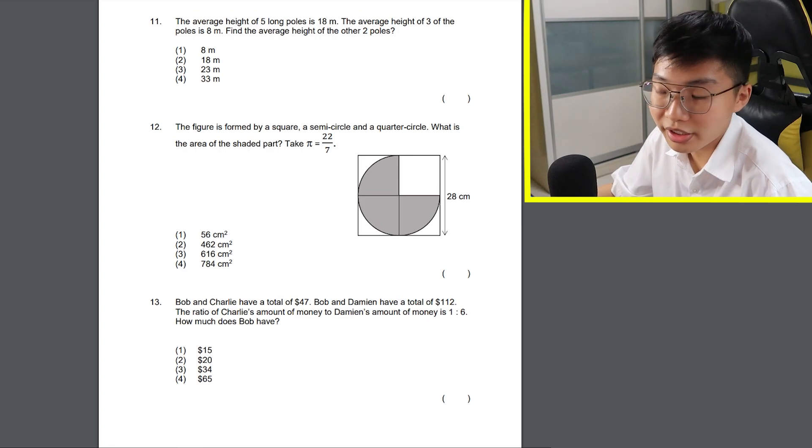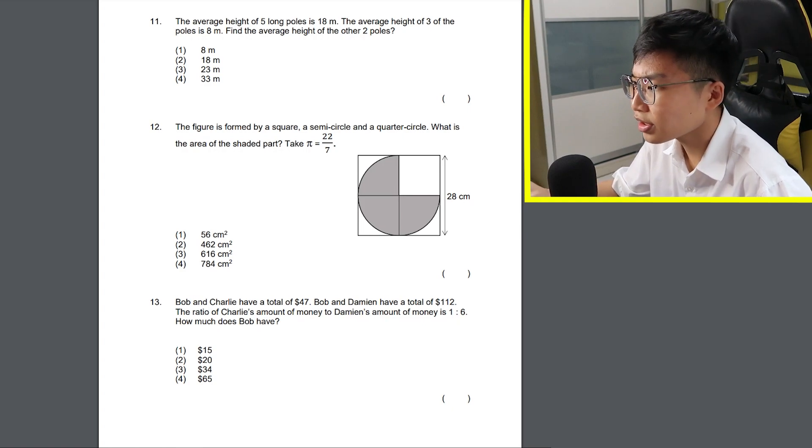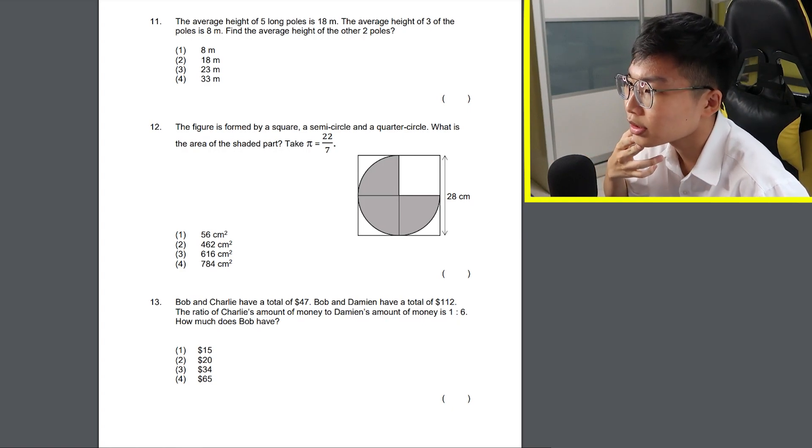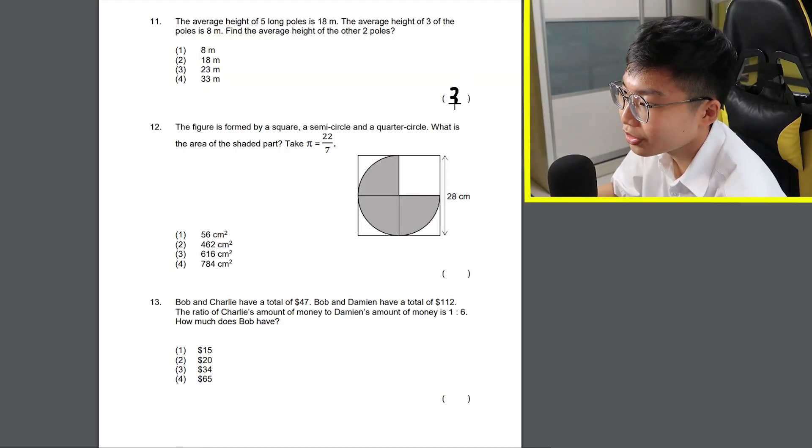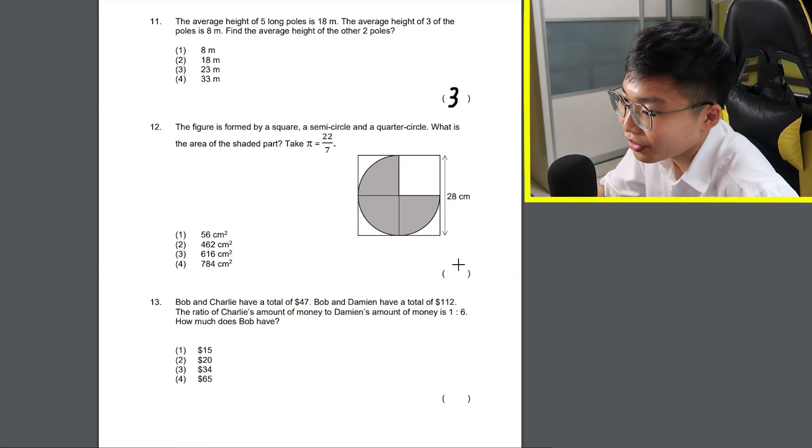Oh wow, we got 11, 12 and 13. So pretty much this whole page. The average height of 3 of the bowls is 8 meters. Find the average height of the other 2 bowls. Am I dumb? Or is this actually hard? I'm just gonna guess. 23. What is the area of the shaded part? Oh my god. I actually forgotten how to solve area already. I might have to guess for this one as well. Let's go with number 4.